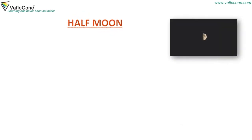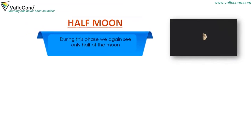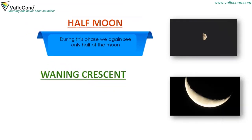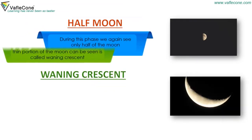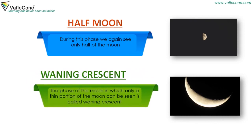Half Moon (waning): During this phase, we can see only half of the moon. Waning Crescent: The phase of the moon in which only a thin portion of the moon can be seen is called waning crescent.